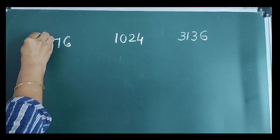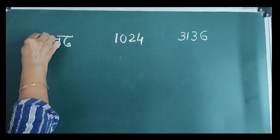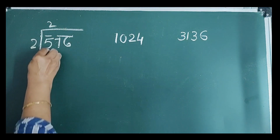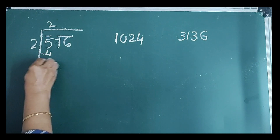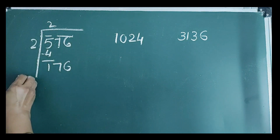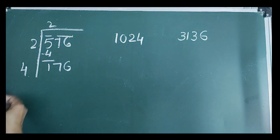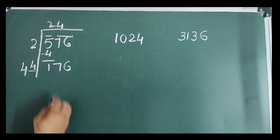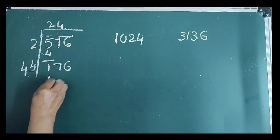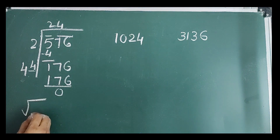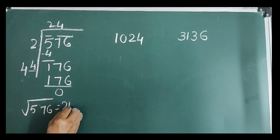Next number is 576. First place the bars. Then 2 times 2 is 4, remainder 1. Bring down next bar 76, new dividend is 176. Double the quotient to get 4 with a blank. Guess digit 4, quotient also 4. 4 multiplied by 44 gives 176, remainder is 0. Therefore, square root of 576 is equal to 24.